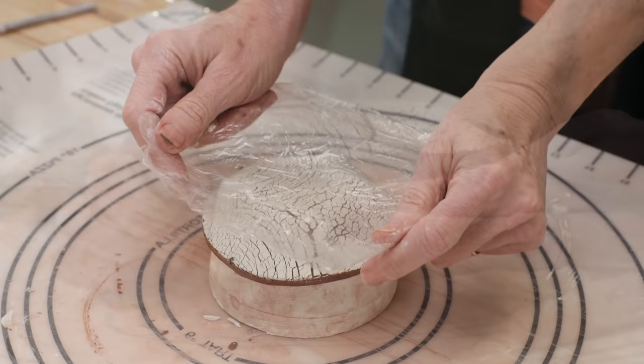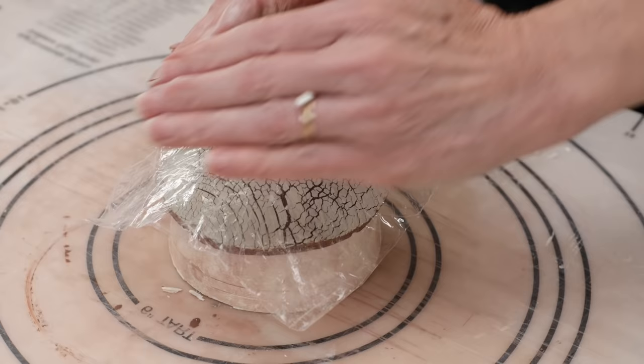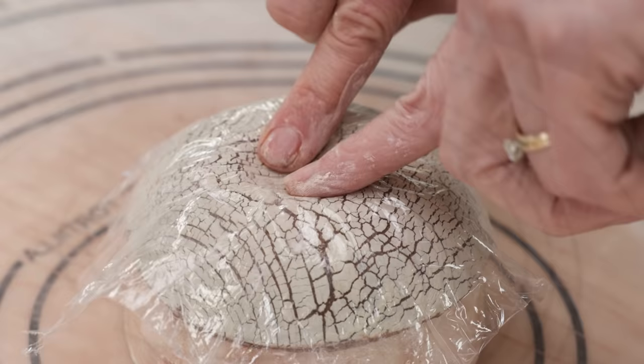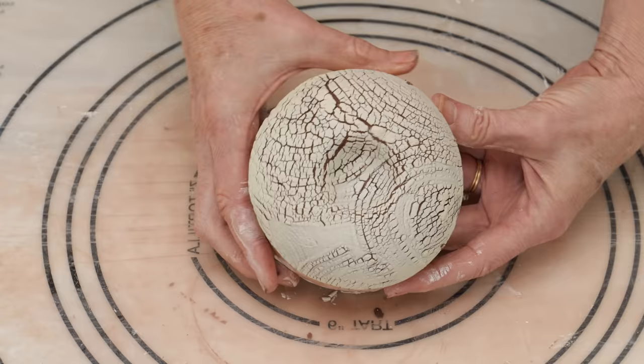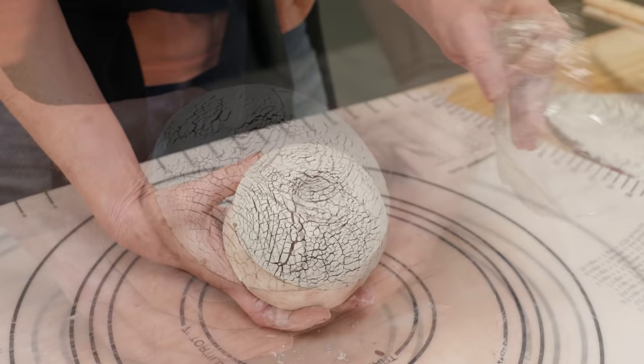I then covered the clay with plastic wrap to protect the fragile slip and I worked the edges down around the form. With my fingers I slowly worked the center clay down into the divot. Now this is what I was hoping it would look like. It easily released from the plaster.